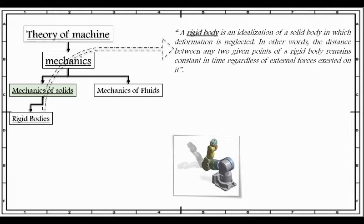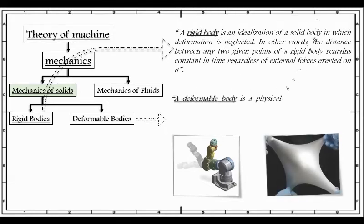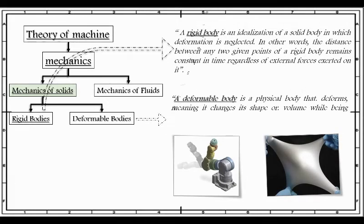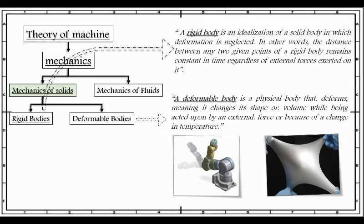Now second part of mechanics of solid is deformable bodies. A deformable body is a physical body that deforms, meaning it changes its shape or volume while being acted upon by an external force or because of a change in temperature. For example, rubber.